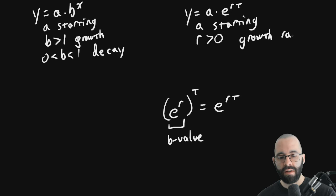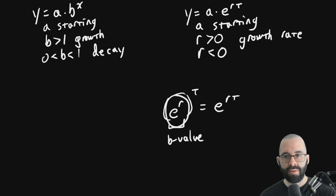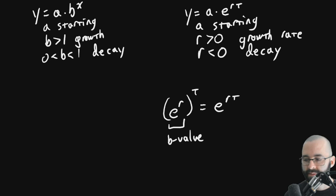Maybe our growth rate. And if R is a negative number, then this inside, which is our B value, if R is negative, this inside is less than one, it's going to be decay. So let's use this. One last example.